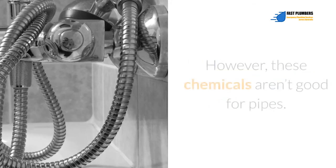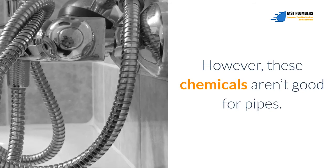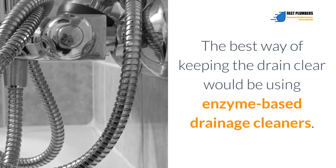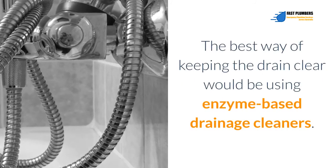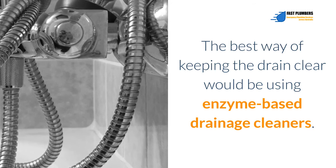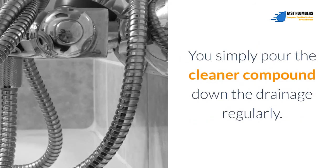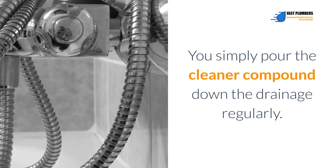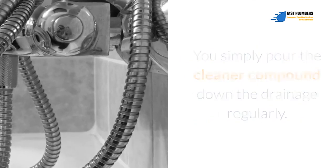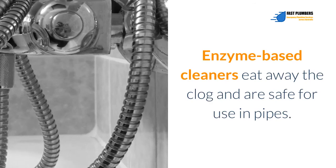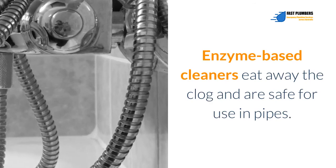In this case, you may use a chemical-based drain cleaner. However, these chemicals aren't good for pipes. The best way of keeping the drain clear would be using enzyme-based drainage cleaners. You simply pour the cleaner compound down the drainage regularly. Enzyme-based cleaners eat away the clog and are safe for use in pipes.